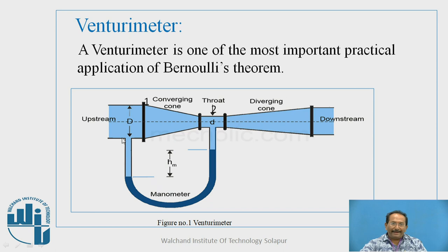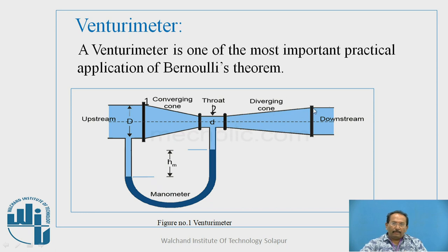Here in the inlet section, you can observe that a manometer is attached. This particular central portion is called the throat section, where the diameter is reduced — this is called the convergent cone. The diameter then increases again, joining the pipe on the other section, or downstream. The other end of the manometer is attached to the throat.